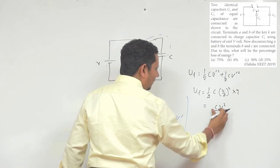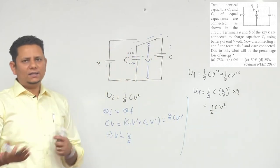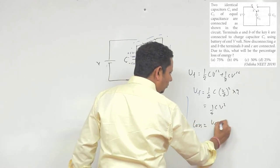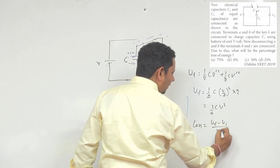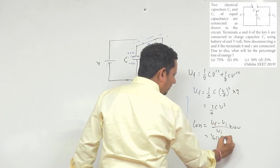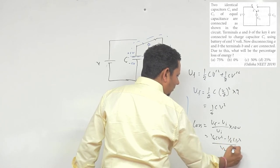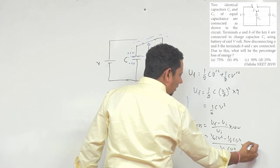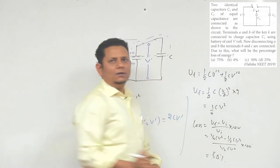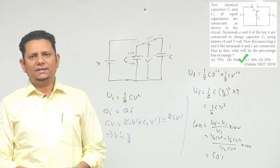Loss energy will be equal to U final minus U initial divided by U initial times 100. So this is 1 by 4 CV square minus 1 by 2 CV square divided by 1 by 2 CV square multiplied by 100. So this value is 50 percent. Based on this, we can say option number C, 50 percent, would be the right answer.